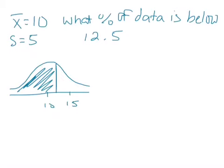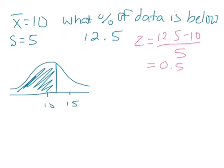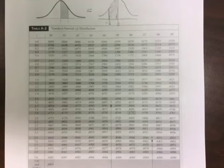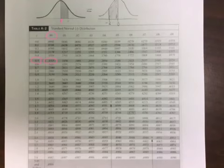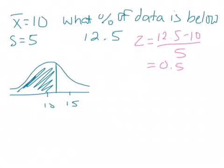So we want to find this area. The first thing we do is find the z-score for 12.5: 12.5 minus 10 over 5 gives us 0.5. Now we look that up in the z-table. Here is 0.5 with decimal places 00, so we use the value 0.1915. This tells you that about 19% of the data is between the mean and this data point.